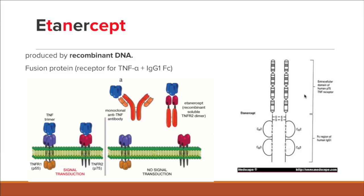Etanercept was created by making identical copies of the domain of the human p75 TNF receptor. They took the TNF receptor itself, created an identical copy, and combined it with the IgG1 FC portion of the human antibody. So we have a partial antibody binding to this receptor — that's what etanercept is. This FC region of the human IgG1 antibody is why it's produced by recombinant DNA. Etanercept can actually bind to tumor necrosis factor alpha — that is its mechanism of action.